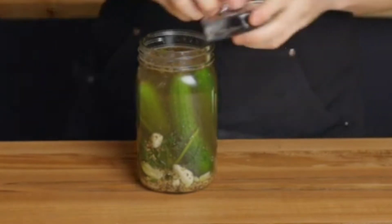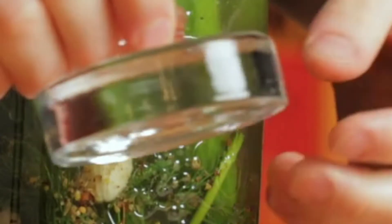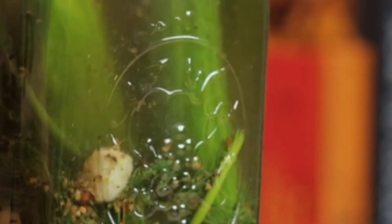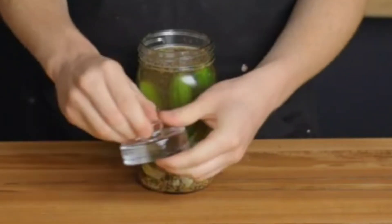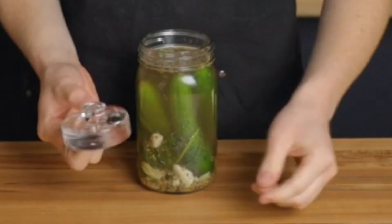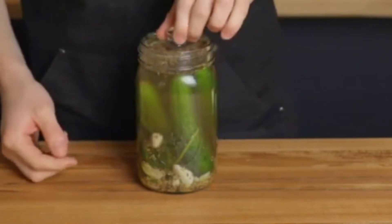After that, put some weight on top because it's really important for the cucumbers to be totally submerged in the solution to get proper fermentation. Otherwise, the bottom ones get fermented while the upper ones have a bad smell. I'm using something small that's easy to fit in the container.